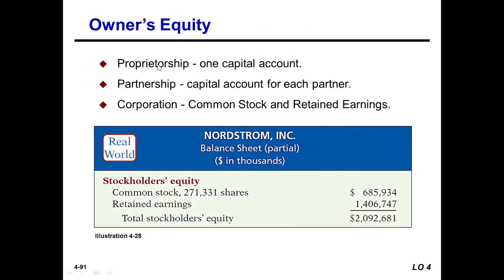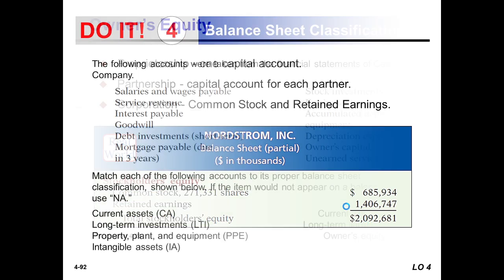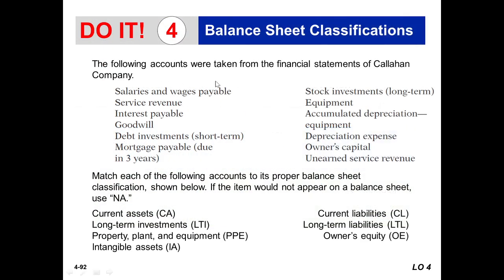Owner's equity varies by business type. For a proprietorship: one capital account. For a partnership: capital accounts for each partner. For a corporation: common stock and retained earnings. On the balance sheet example, stockholders' equity includes common stock and retained earnings totaling a specific figure for total stockholders' equity.